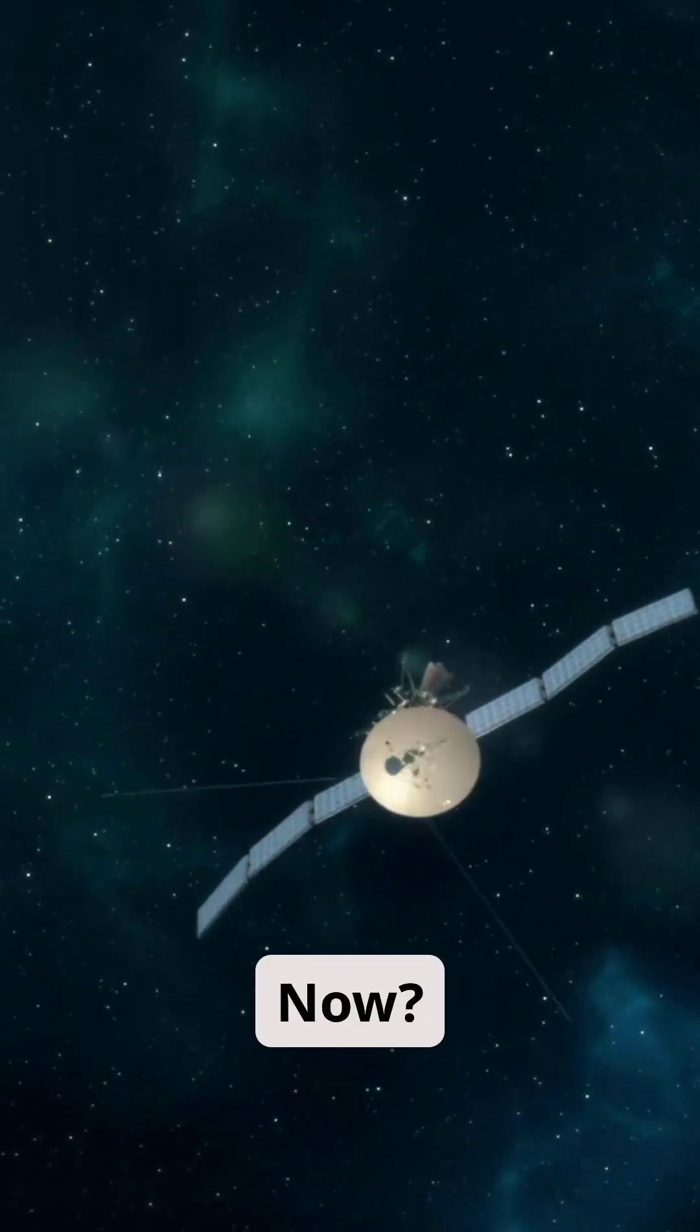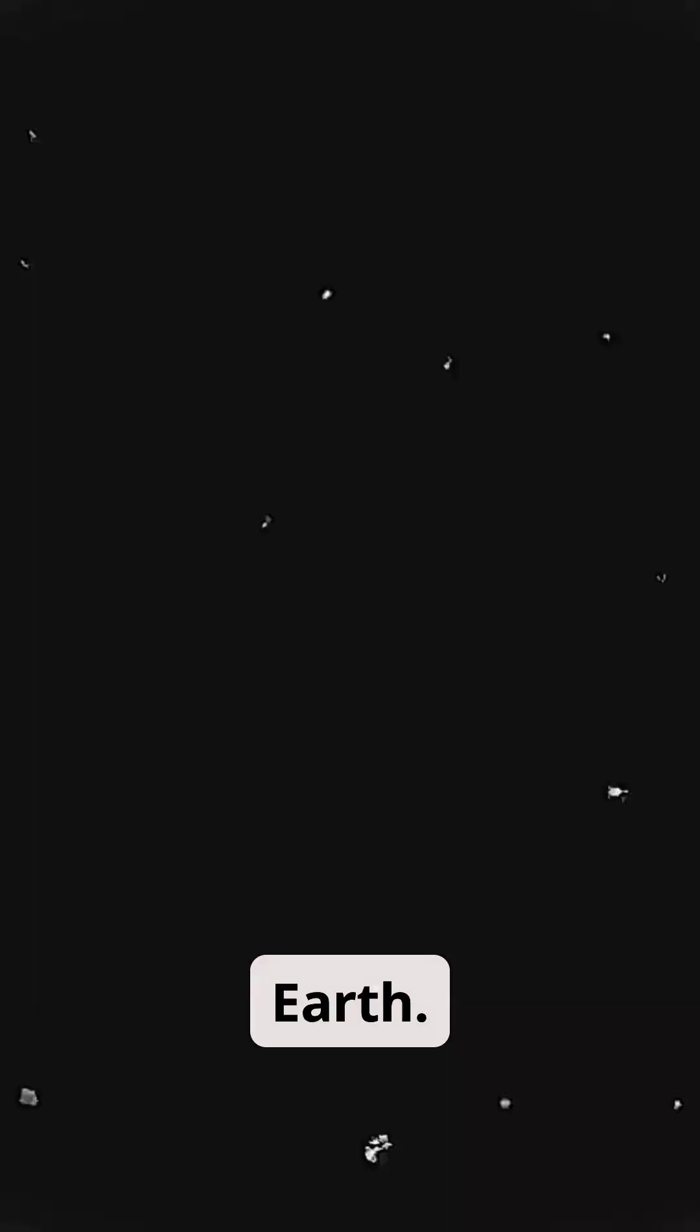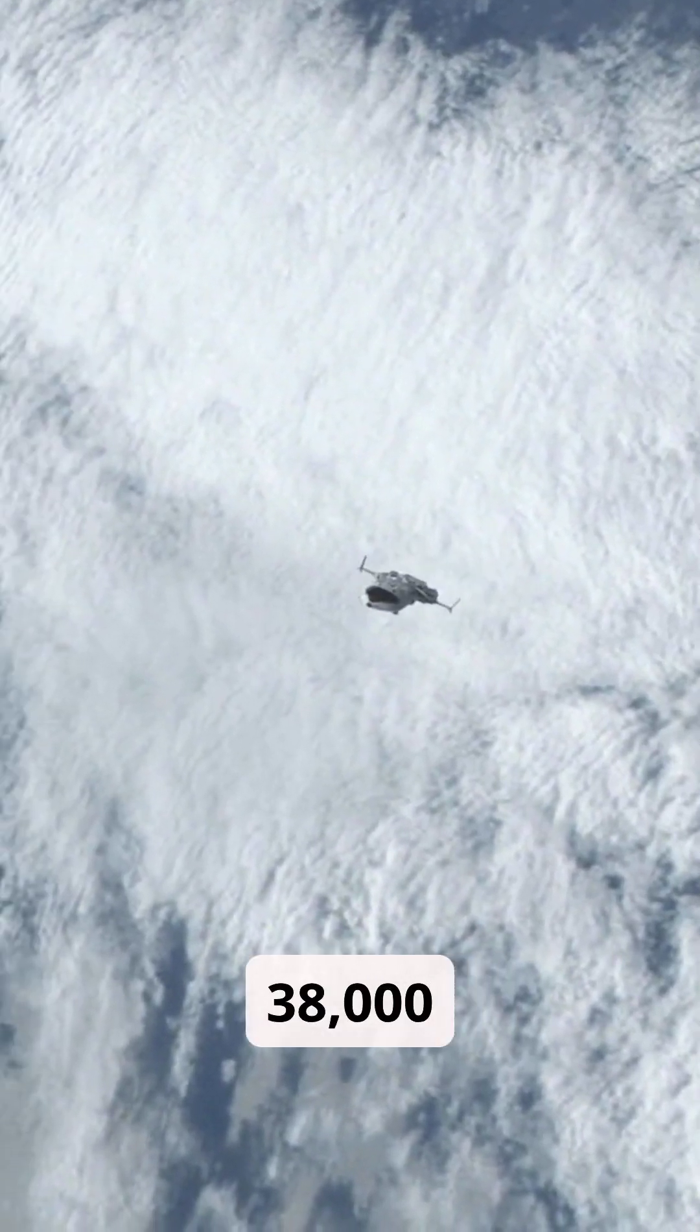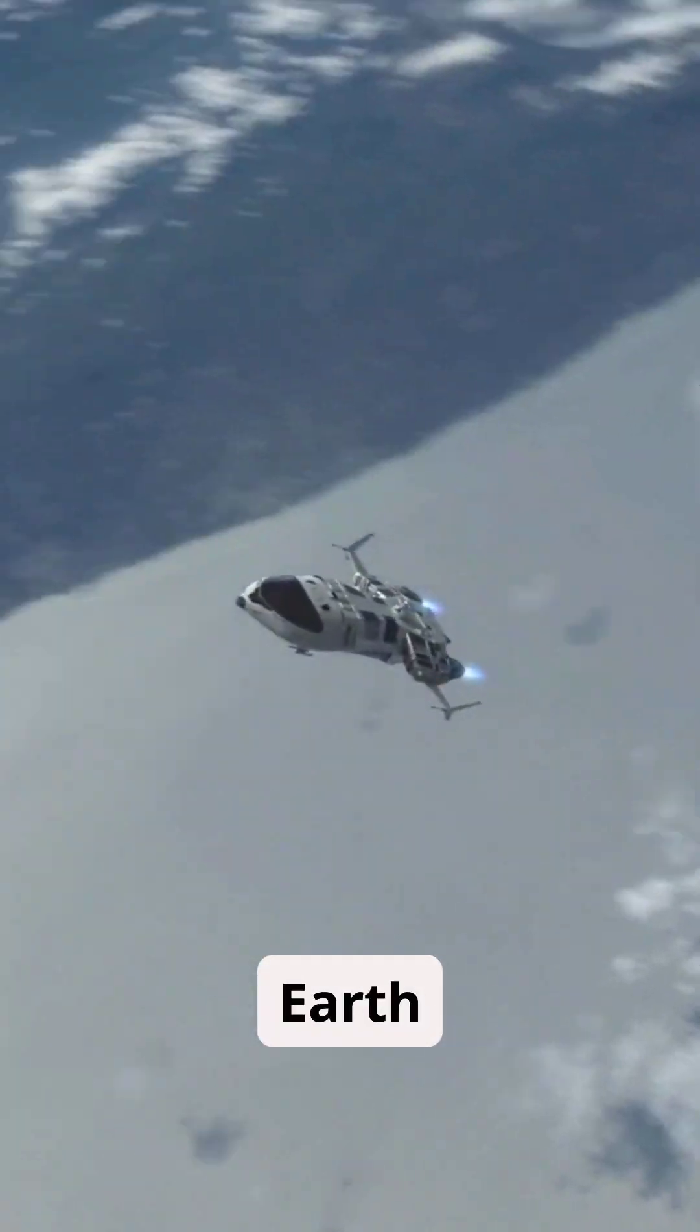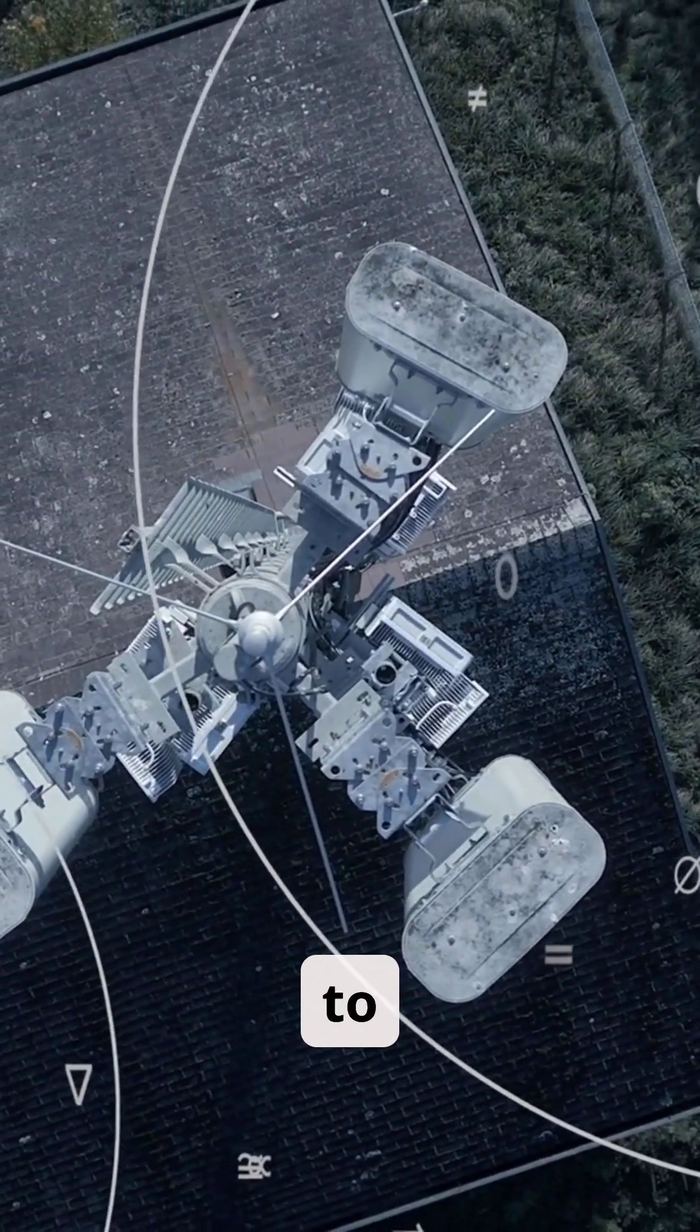Where is Voyager 1 now? Voyager 1 is over 15 billion miles, 24 billion kilometers from Earth. It moves at 38,000 miles per hour, fast enough to go around Earth in 45 minutes. Its radio signal is very weak and takes over 22 hours to reach NASA.